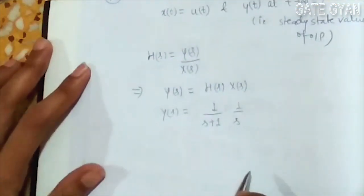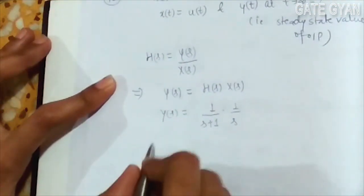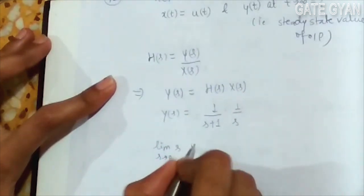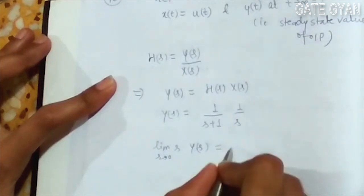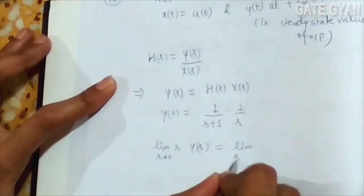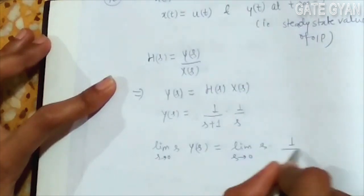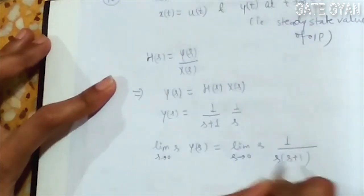Now in Laplace domain to get the steady state value, formula is given by limit s tends to 0 s into Y(s). So here we will simply put limit s tends to 0 s into 1 upon s into s plus 1.